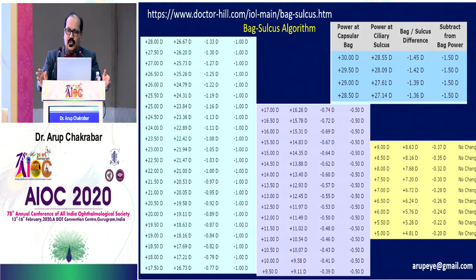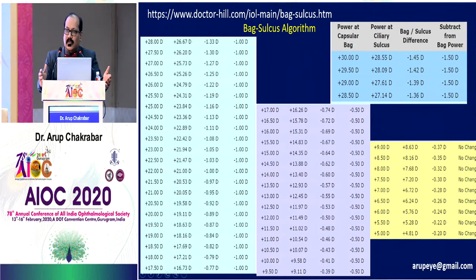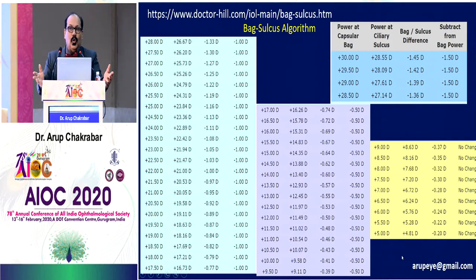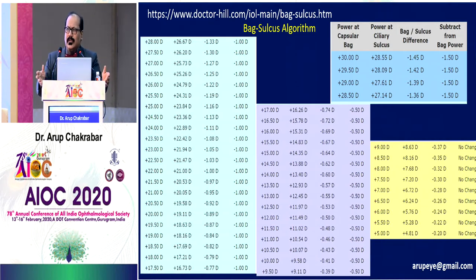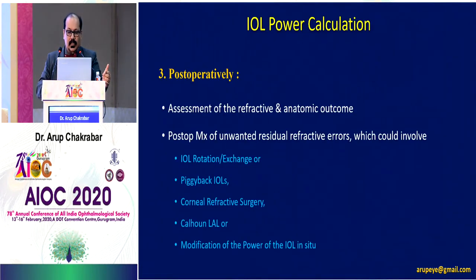This is a very important chart from Warren Hill's website — accessible free of cost. This is the back sulcus algorithm. If I have had an intraoperative complication and need to keep the lens in the sulcus, I use this algorithm. For example, if my IOL power is plus 5 to plus 9 diopters and I'm keeping it in the sulcus, I won't modify the IOL power. On the other hand, if the IOL power is 28.5 to 30 diopters, I'd reduce the power by a factor of 1.5 diopters — roughly a 5% reduction of the lens power when keeping the lens in the ciliary sulcus.